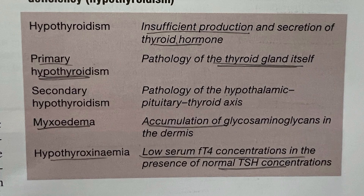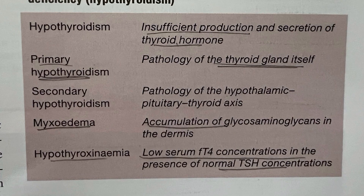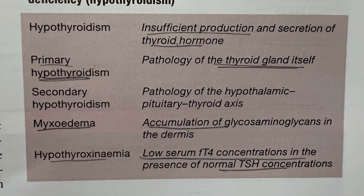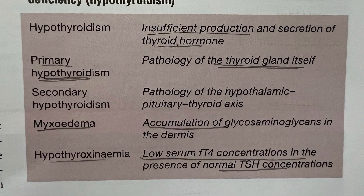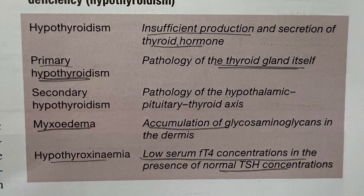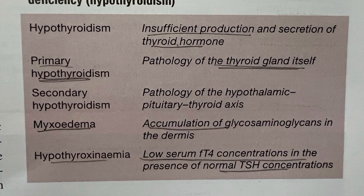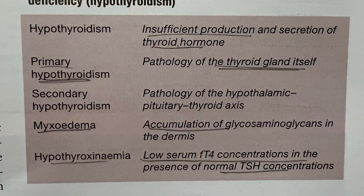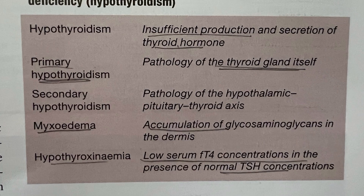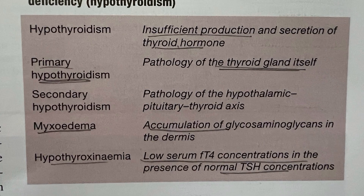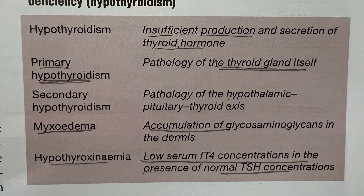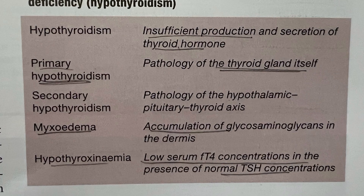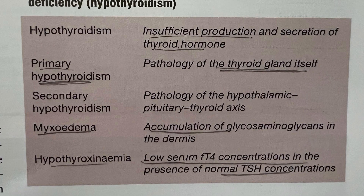4. Myxedema: Accumulation of glycosaminoglycans in the dermis. It can happen in hyperthyroidism as well as in hypothyroidism. 5. Hypothyroidism: Low serum T4 concentration in the presence of normal TSH concentration.